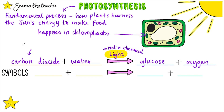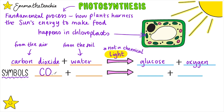Let's look at where each of the reactants comes from. CO2 comes from the air around the leaf and diffuses in through the stomata. Water comes from the soil and is absorbed by osmosis. You also need to know the chemical symbols: carbon dioxide is CO2, water is H2O. We don't need to know a symbol for light as it's not a chemical. Glucose is C6H12O6 and oxygen is O2, so make sure you have a go at memorizing those.